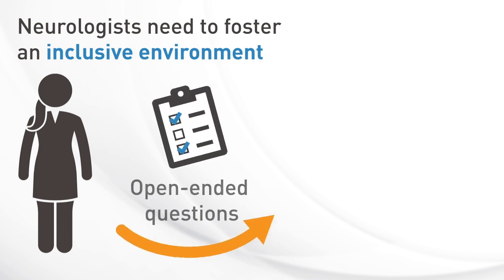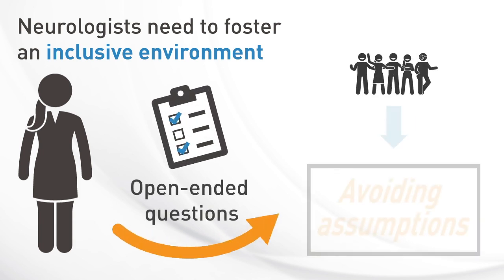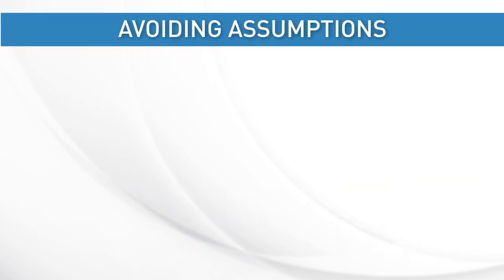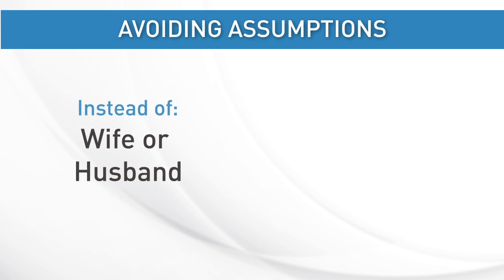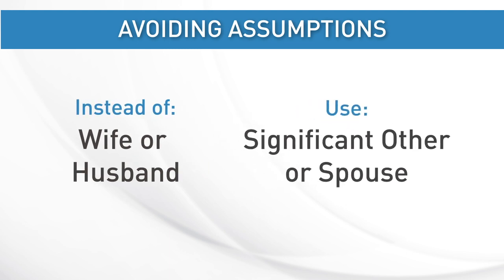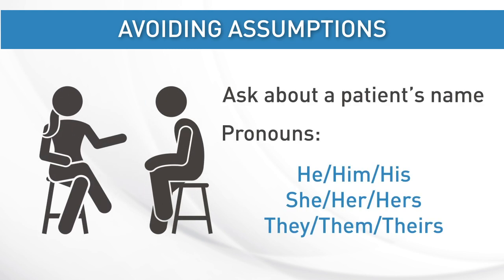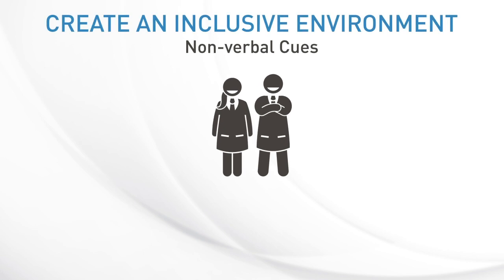This includes asking open-ended questions and avoiding assumptions. For example, instead of using 'wife' or 'husband,' use 'significant other' or 'spouse' until the person identifies the appropriate term. It is also important to ask about the name and pronouns a patient uses.